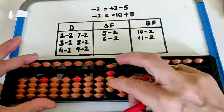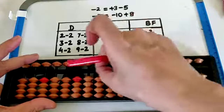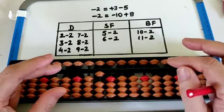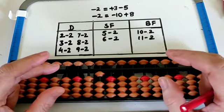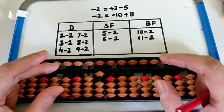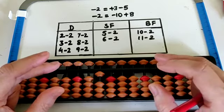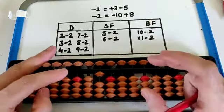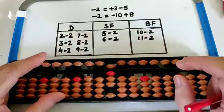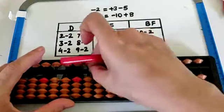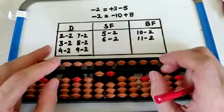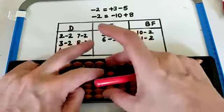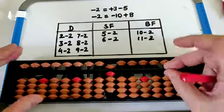9 minus 2 — directly, that is 7. Now 10 minus 2 — na toh directly karne ke liye beads hain, na hum small friend se kar sakte hain, toh hum big friend ki help lenge. So big friend formula kya ho jayega? Minus 10 plus 8. So it is minus 10 plus 8, that is 8. 11 minus 2 — again we can do with big friend, so it is minus 10 plus 8, that is 9.